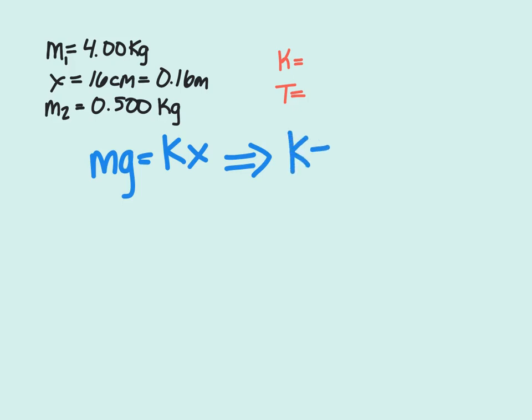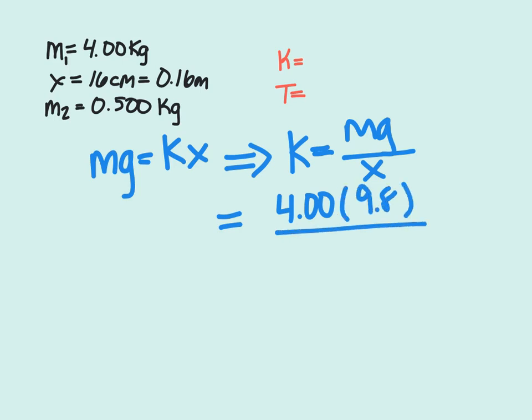Spring constant equals mass times gravity divided by displacement. We're given that the mass is 4 kilograms and gravity is 9.8 meters per second squared. The spring has been extended with the 4-kilogram block.